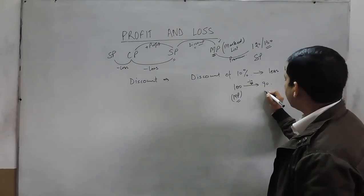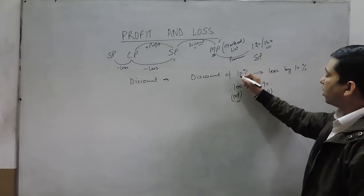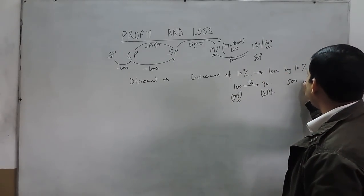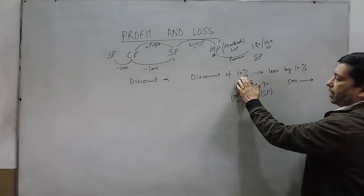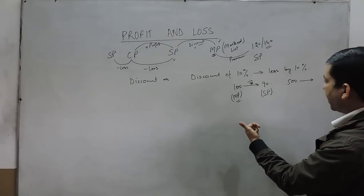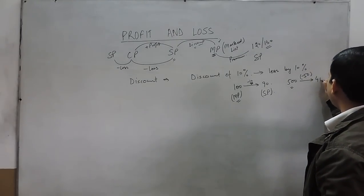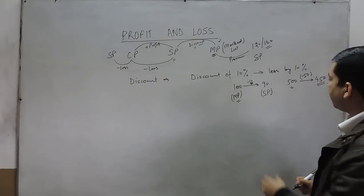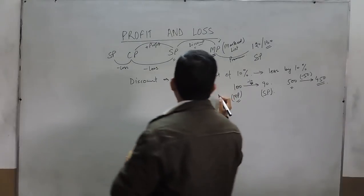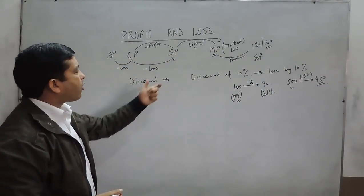The selling price becomes rupees 90. Or when the mark price of the article is 500 and there is a discount of 10%, that means 10 rupees is discount on every 100 rupees. So on rupees 500 we will get a discount of rupees 50, and the article will be sold for rupees 450. This is the actual meaning of a discount of 10%.